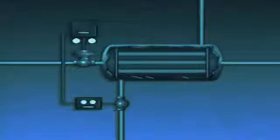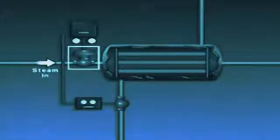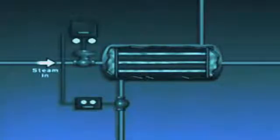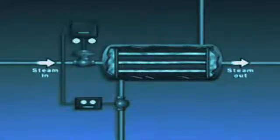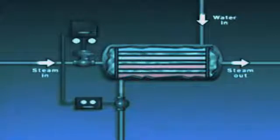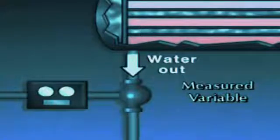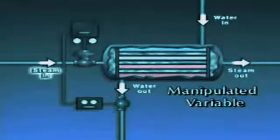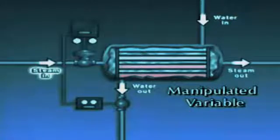In this system, steam is used to heat water. The steam enters the system through a valve, then flows through tubes inside the heater, and exits through a pipe on the other side. The steam transfers heat to the water, which enters the heater at the top, flows around the tubes, and exits at the bottom. The temperature of the water at the outlet of the heater is the controlled variable and also the measured variable. The manipulated variable is the inlet steam flow, which is adjusted to keep the outlet water temperature at set point.